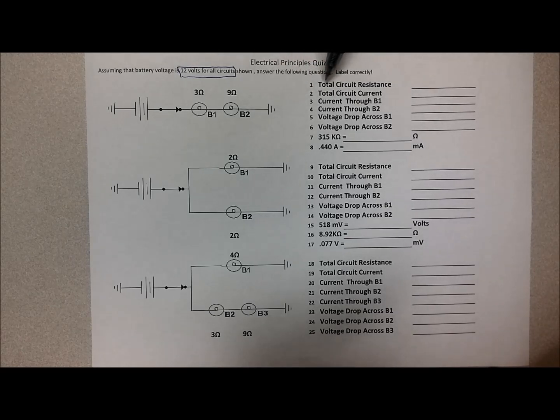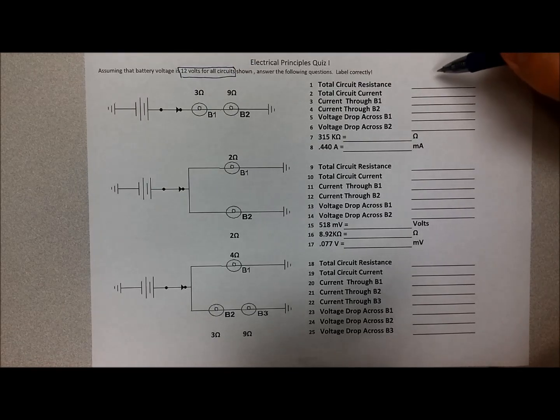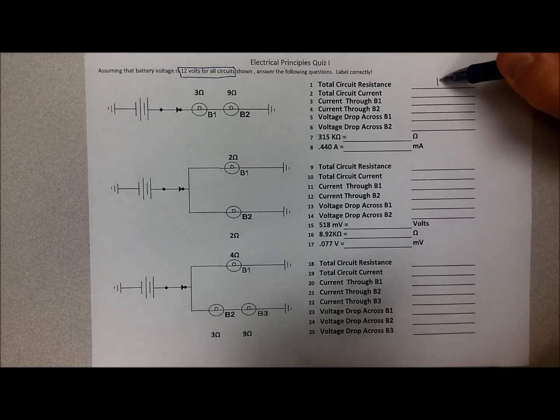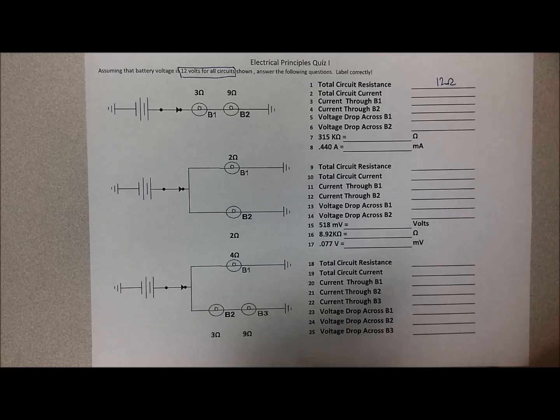So to start out, the question asks, what is total circuit resistance? We come over and we have one bulb that has three ohms of resistance and one that has nine ohms of resistance. Because they're in series and all the current that leaves the battery must pass through both of them, the resistance is cumulative. So it's a total of 12 ohms that it has to pass through. Total circuit resistance is 12 ohms.